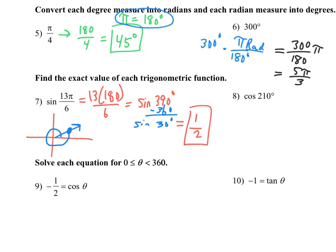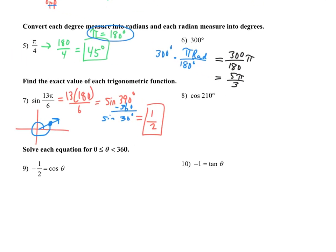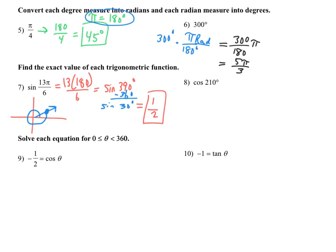Let's do another one — cosine of 210. Let's think about where would 210 end up. If we start here and go all the way around — that's 180 — then we need to go 30 more, so we're 30 degrees past 180. That little green angle there is the reference angle, always getting you back to the x-axis in that quadrant, and it is 30 degrees.